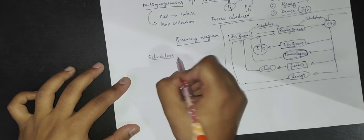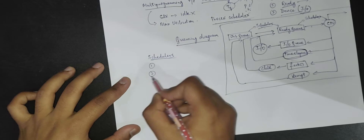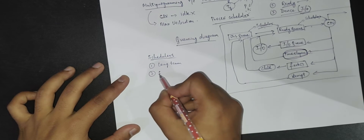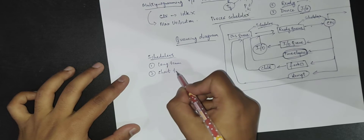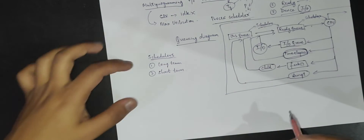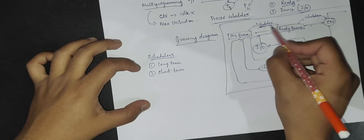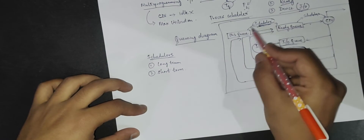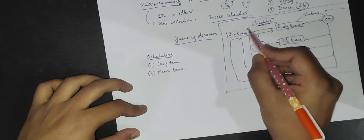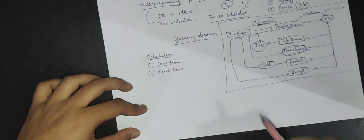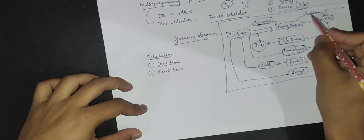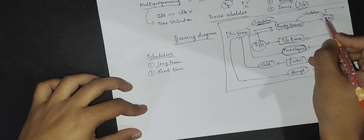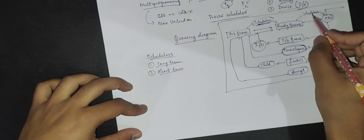In schedulers, we basically have two major types: one is called the long-term scheduler and the second is called the short-term scheduler. The scheduler which takes processes from the job queue and moves them to the ready queue is called the long-term scheduler. The scheduler which picks processes from the ready queue and gives them CPU is called the short-term scheduler.